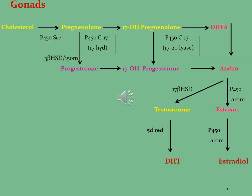What is a gonad? A gonad is a sex gland — a reproductive gland that is a mixed gland that produces gametes, that is sex cells, and the sex hormones of an organism. In the female of the species, the reproductive cells are the egg cells, and in the male the reproductive cells are the sperm. The male gonad, the testicles, produces sperm in the form of spermatozoa; the female gonad, the ovary, produces egg cells.